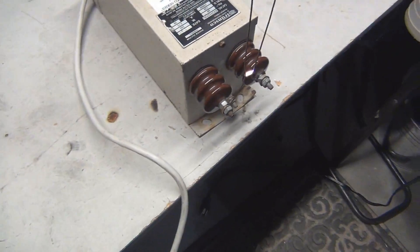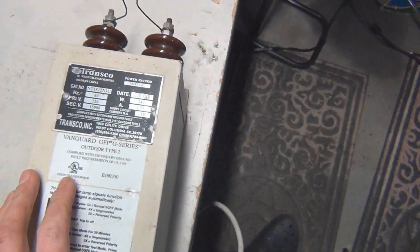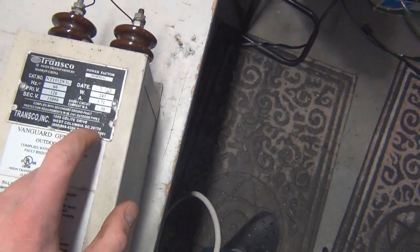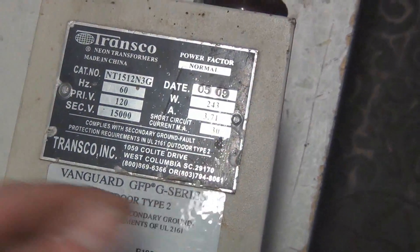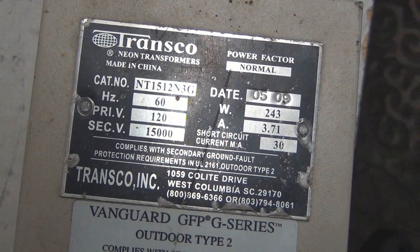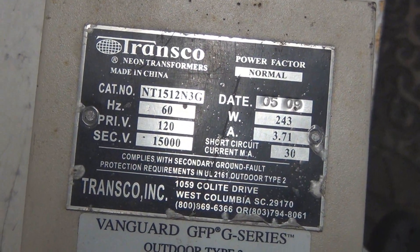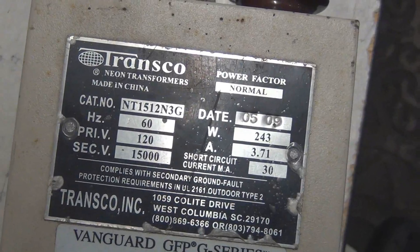This is a 15,000 volts, I believe it's 30, yeah, 30 milliamp. Yeah, let's see if you can get this for you guys here. There we go. 15,000 volt, 30 milliamp neon sign transformer.